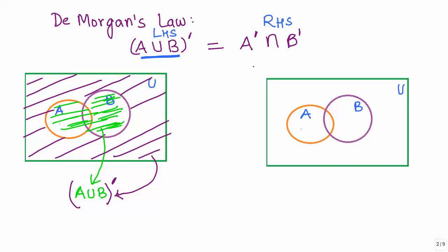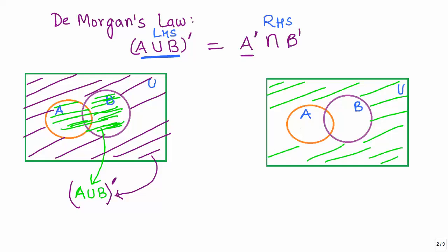Now let's look at what happens when we take the individual complements. I'm going to use the green color for A complement. A complement is everything that is outside A. Please note that the part of set B that contains elements not within A also falls within the complement of A. So this entire region outside A is A complement.